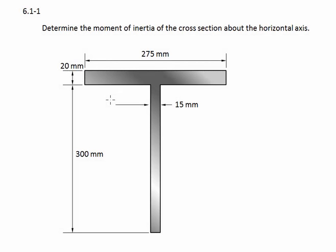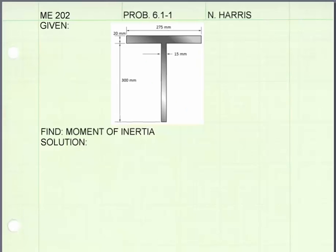Problem 6.1-1. Determine the moment of inertia of the cross section about the horizontal axis. Here we have a cross section — it's T-shaped — and we're given the dimensions. Let's do this problem.